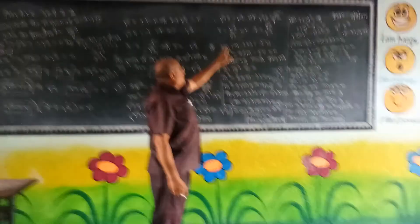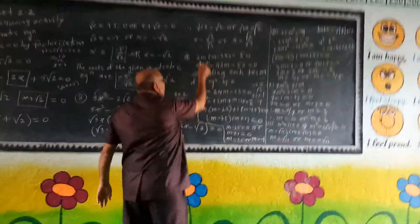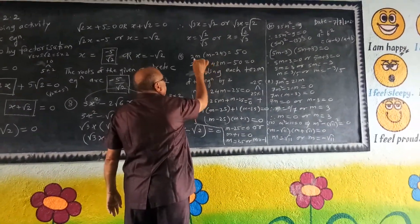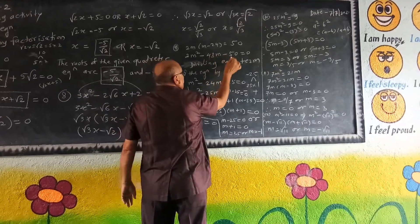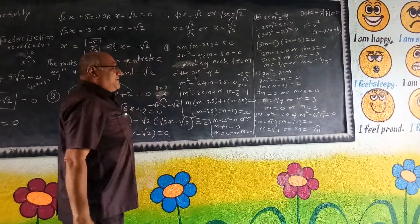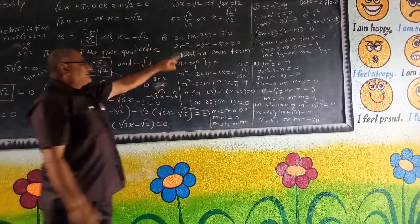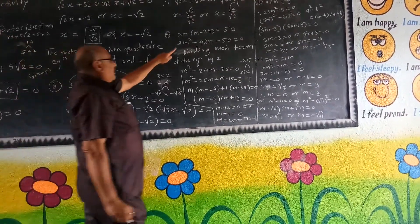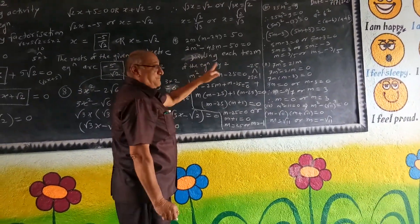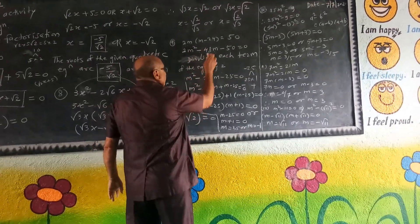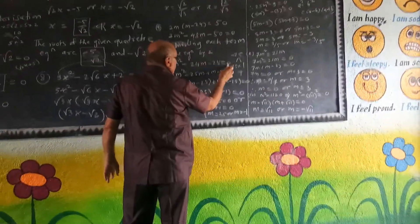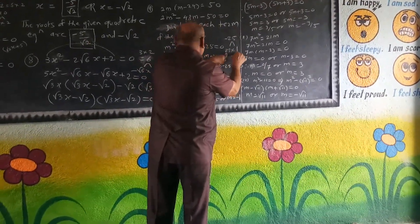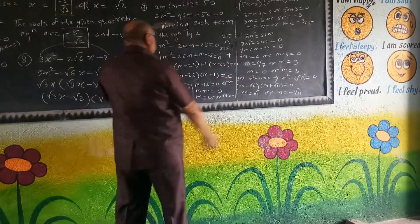Example 9: 2m into m minus 24 equals 5, which gives 2m squared minus 48m equals 5, so 2m squared minus 48m minus 5 equals 0. Multiplying both sides, the equation becomes 2m squared minus 24m minus 25 equals 0. The product is minus 25, and minus 25 plus 1 gives minus 24.